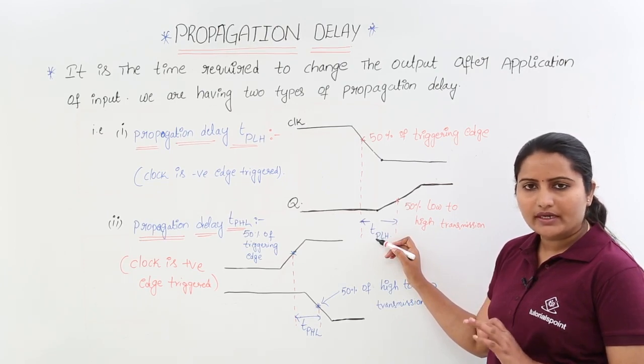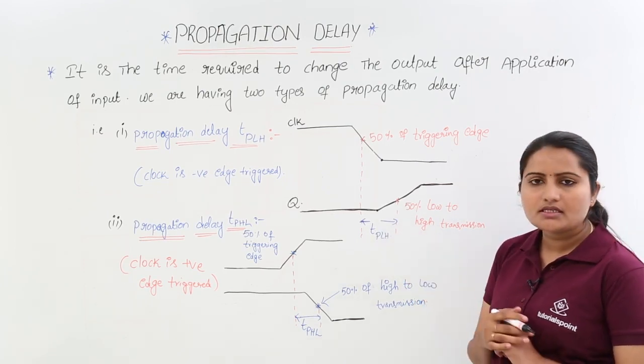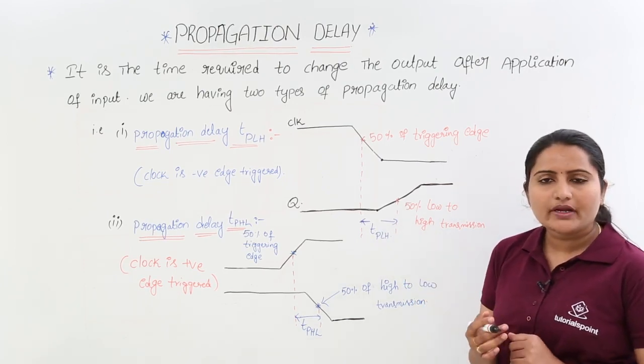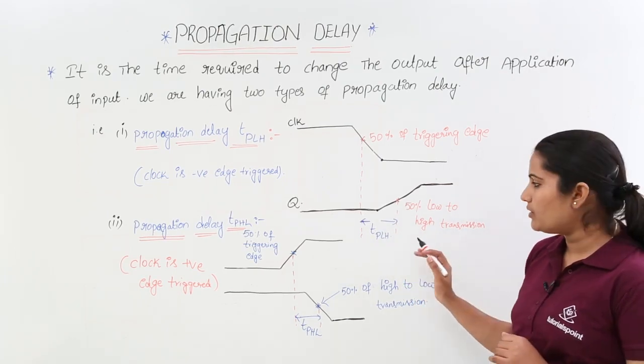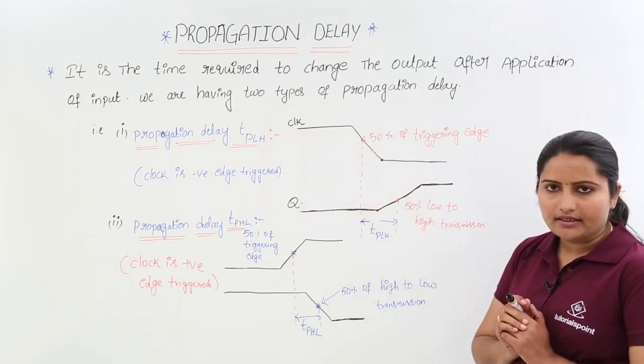TP stands for propagation delay. TP LH means propagation delay low to high. Like this we will calculate.